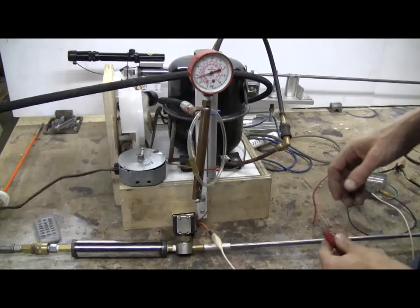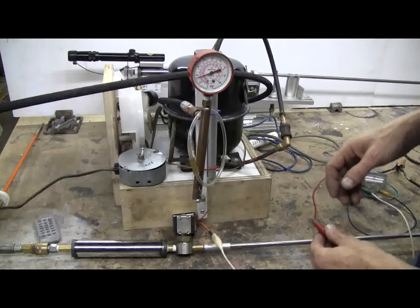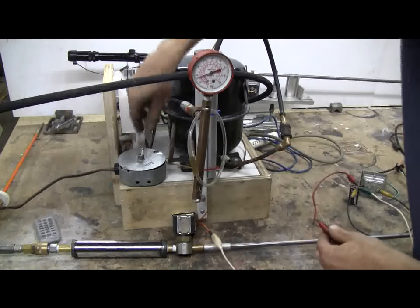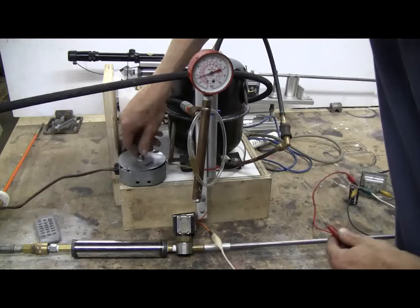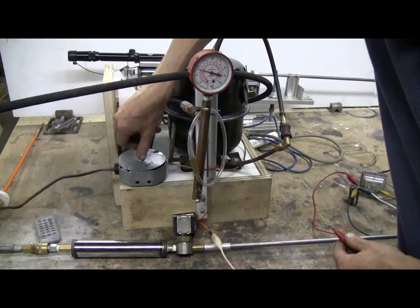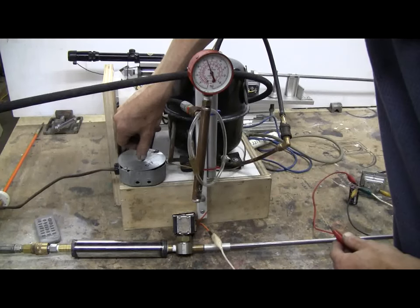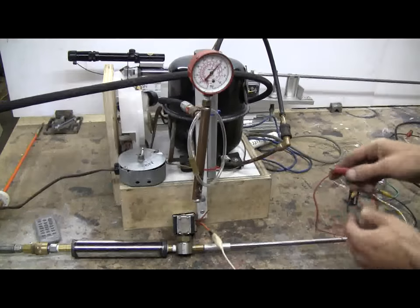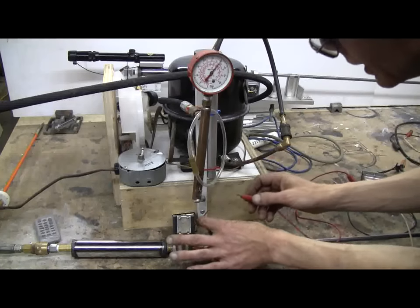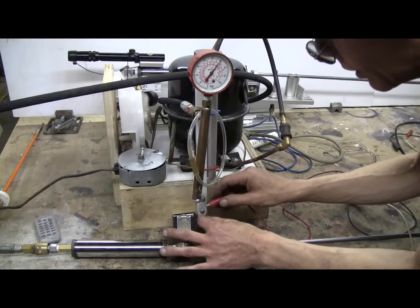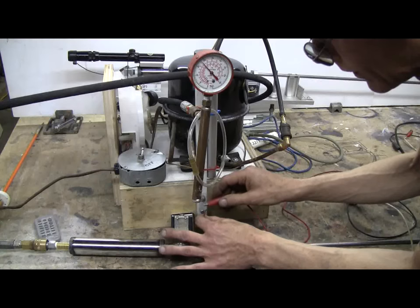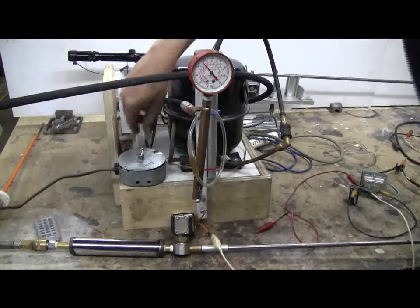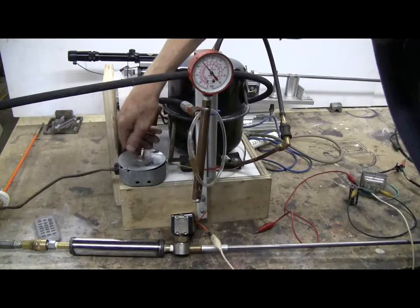Now that we're set up to use DC to fire the solenoid, I'm going to bring the pressure up to 300 pounds. 150, 200, 250, 300 psi. We could not fire it here on AC before. Here goes DC. Immediate firing.